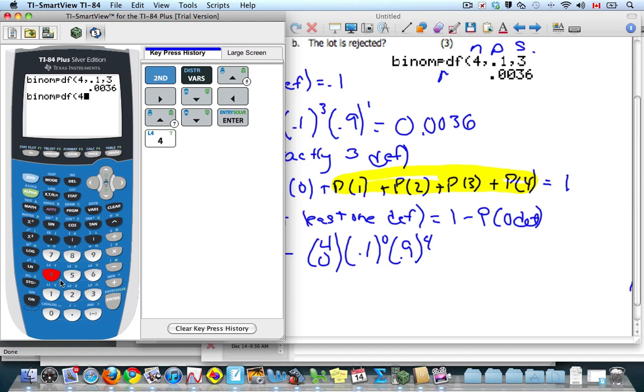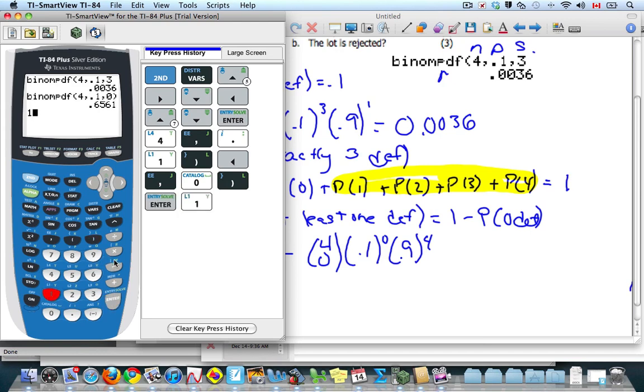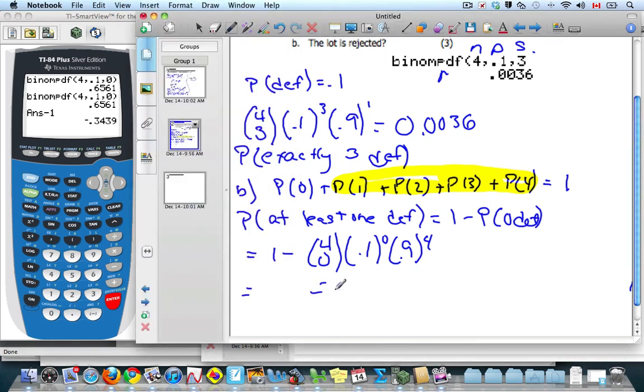I know I have four trials. Probability of success is 0.1, and I want 0. I'm going to enter that. And I go 1 minus that answer. So let me subtract 1, and I end up with 0.344. So the probability that the shipment is rejected is 34.4%.